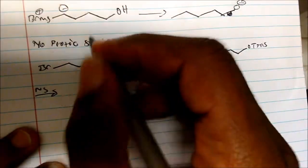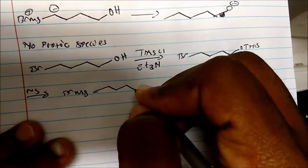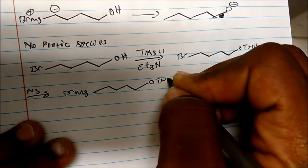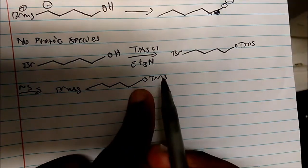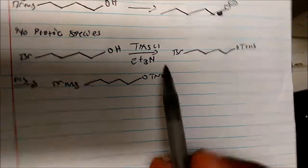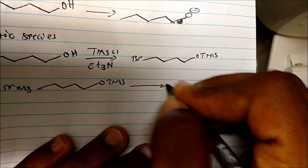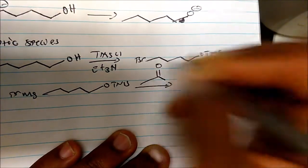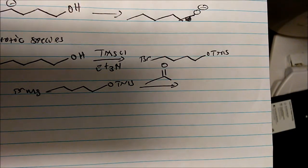Now look what happens - magic. I have OTMS now. This is not protic anymore, so this cannot react with one another. Now we can add acetone - this is our classic Grignard reaction. We add acetone to this molecule.